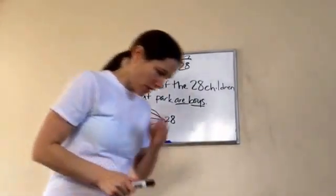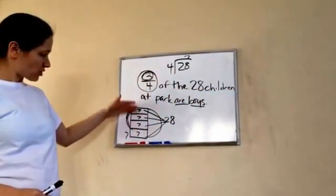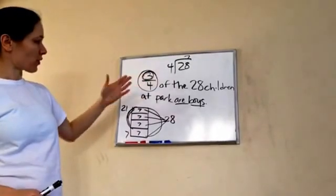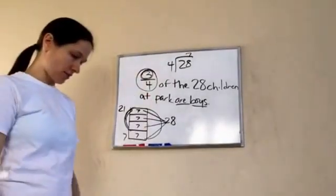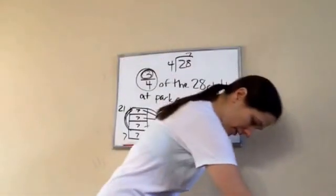Mm-hmm. So it's pretty simple, and we learned that there were four parts, seven children in each part, and then since there were three-fourths, then we knew that it was going to be 21. All right? You got it? Yep. That's lesson 77. Okay.